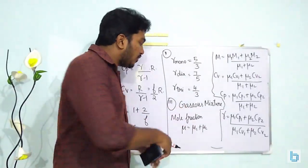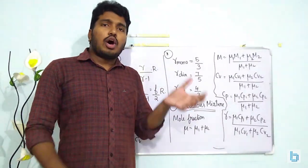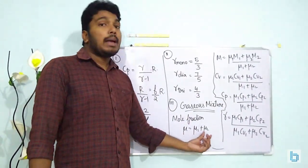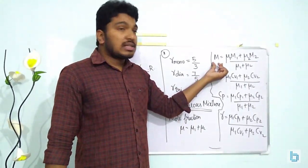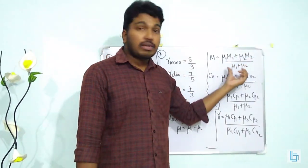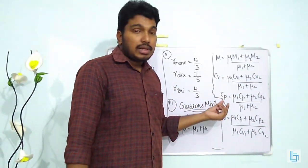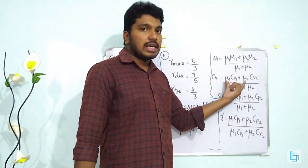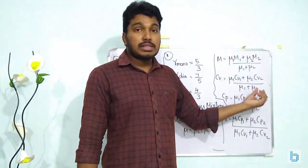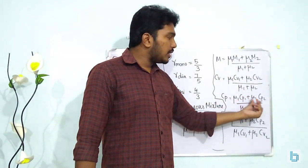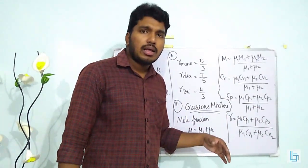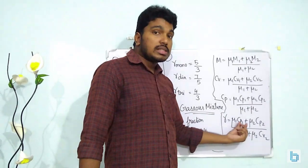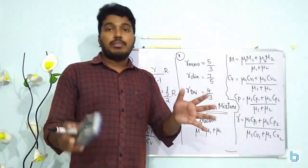For a gaseous mixture: if two non-reactive gases with μ1 and μ2 moles are enclosed in volume V, the total moles = μ1 + μ2. The mixture molecular weight = (μ1M1 + μ2M2)/(μ1 + μ2). Cv(mixture) = (μ1Cv1 + μ2Cv2)/(μ1 + μ2). Cp(mixture) = (μ1Cp1 + μ2Cp2)/(μ1 + μ2). γ(mixture) = Cp(mixture)/Cv(mixture) = (μ1Cp1 + μ2Cp2)/(μ1Cv1 + μ2Cv2).